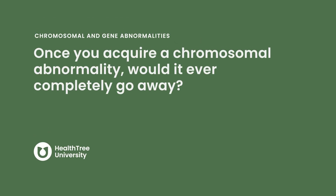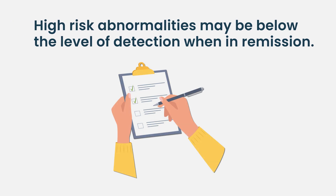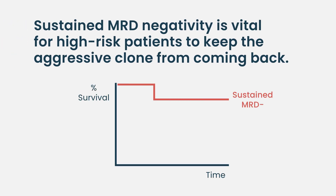Once you acquire a chromosomal abnormality, would it ever completely go away? We don't know of high risk completely going away. It's really about whether you can detect it — in terms of the clones. If you're sustained MRD negative, that bodes very well. But a single time point of MRD negativity is not the same in standard risk versus high risk. Persistence of MRD negativity is most important for all patients, but particularly for high-risk patients, because it's about keeping that clone in remission.